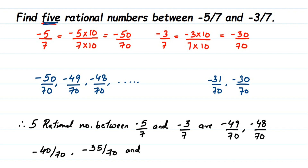That's it! You can take any other numbers if you want — I just picked five randomly. I hope this question is clear on how to find rational numbers between two rational numbers. If you have any other questions or doubts, you can drop a comment. Thank you so much for watching.